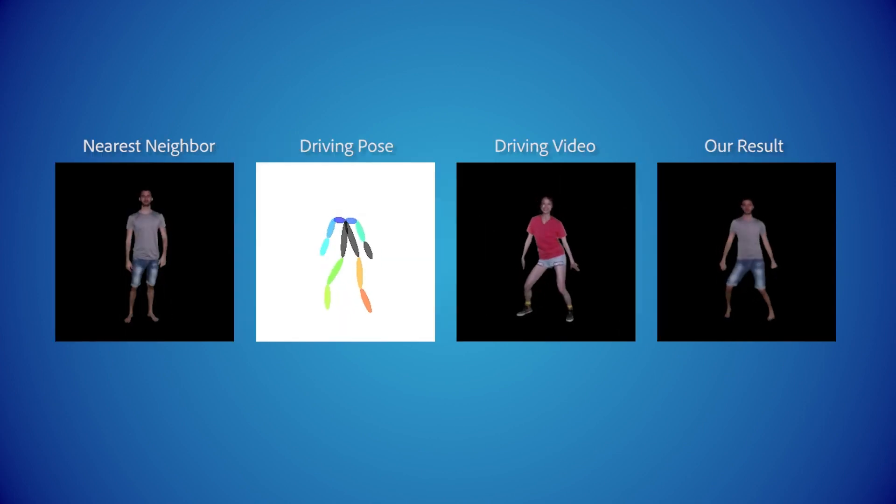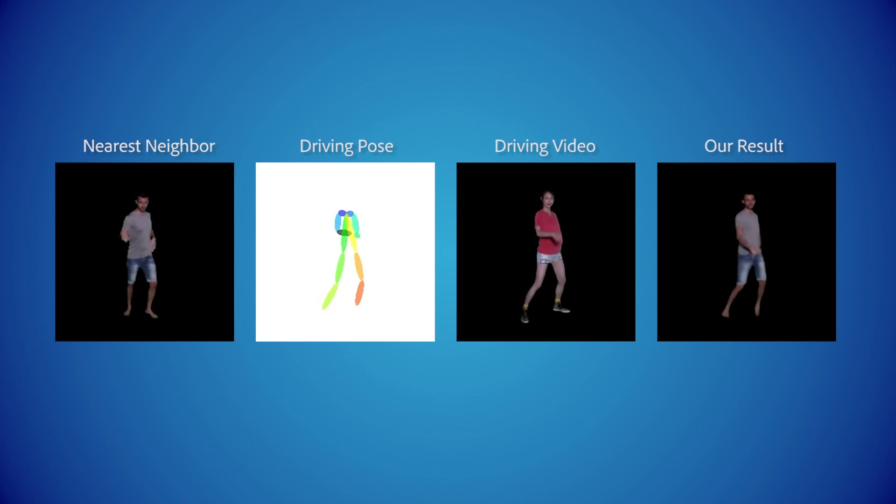Here we present an example where the motions of the target actor are different from the driving video. Limbs with orientations that do not exist in the reference video are marked in gray.